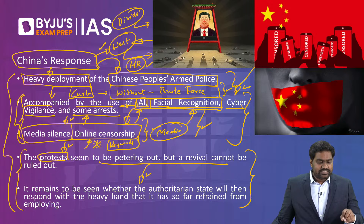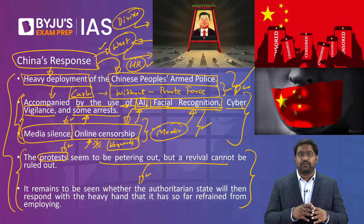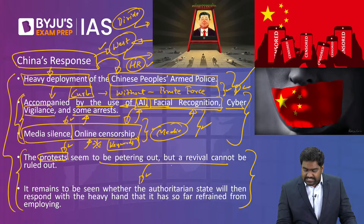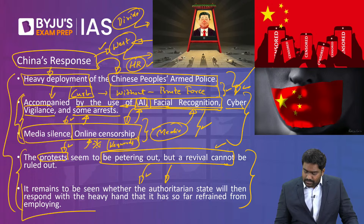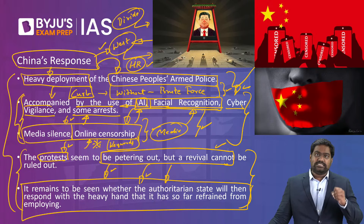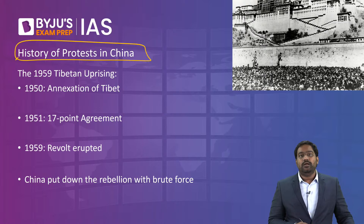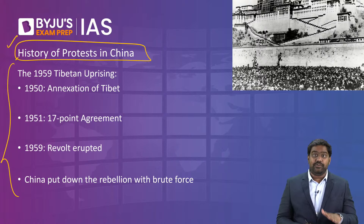This resentment is not just against one event — experts argue it is a wider resentment against the economic, social, and political policies of the Communist Party. If there are adverse events in the coming days, a revival of protests could happen. And if China is pushed on the back foot, the state is likely to use violence leading to large-scale killings, as this has happened in the past. That is why it is very important to examine the history of protests in China.